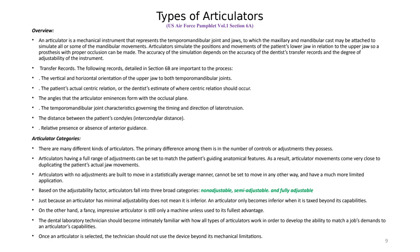The transfer records include: the vertical and horizontal dimensions or orientation of the upper jaw to both temporomandibular joints; the patient's actual centric relation; the angles of the articular eminence that form the occlusal plane; the temporomandibular joint characteristics governing lateral protrusive movement; the intercondylar distance; and the relative presence or absence of anterior guidance. All these movements are necessary to be registered with the articulator, especially for implant cases, to fabricate the prosthesis correctly.